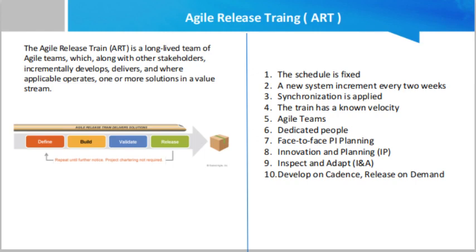The Agile Release Train, ART, is a long-lived team of agile teams which, along with other stakeholders, incrementally develops, delivers, and where applicable, operates one or more solutions in a value stream. ART aligns teams to a shared business and technology mission. Each is a virtual organization of typically 50 to 125 people that plans, commits, develops, and deploys together. ARTs are organized around the enterprise's significant development value streams and exist solely to realize the promise of that value by building solutions that deliver benefit to the end user. ARTs are cross-functional and have all the capabilities — software, hardware, firmware, and others — needed to define, implement, test, deploy, release, and where applicable, operate solutions. ART delivers a continuous flow of value.